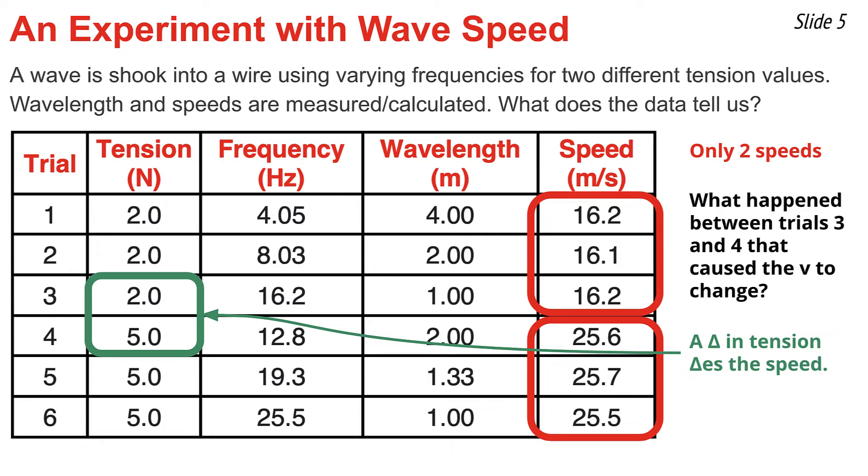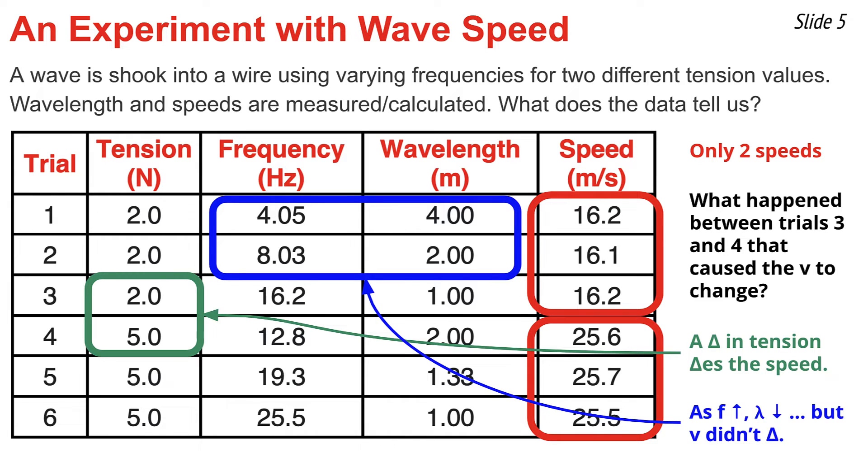There's one more thing that the data tells us and it occurs in columns labeled frequency and wavelength. If you look at trials 1, 2, and 3, you notice that the frequency is increasing. Meanwhile, the wavelength is decreasing while the speed remains a constant value of about 16.1 ish meters per second. A matter of fact, I noticed that in rows 1 and 2, the frequency is doubled while the wavelength is halved. The same thing occurs in trials 2 and 3 when the frequency is doubled from 8 to 16, but the wavelength is halved from 2 to 1.